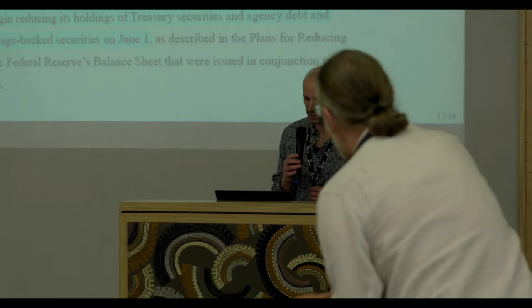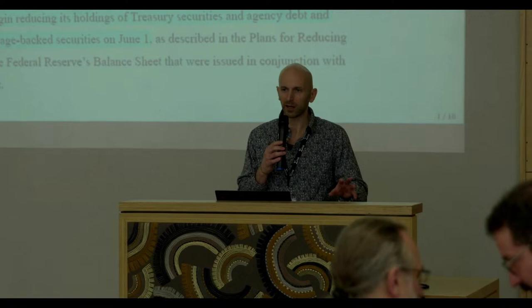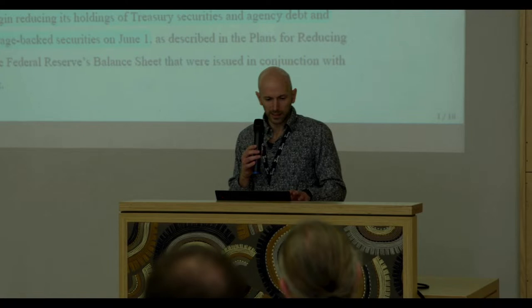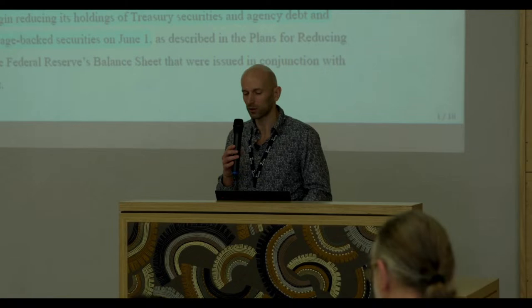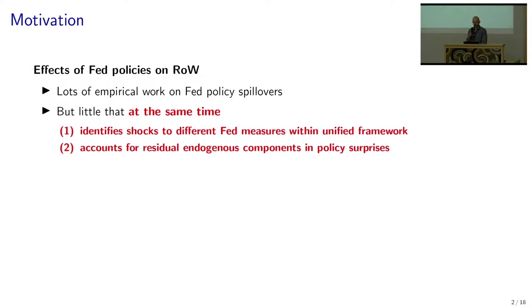Let me illustrate what I mean with different measures in the Fed's toolkit using this FOMC press release from 2022 — it's from the first time I presented this paper externally outside the ECB. Highlighted in red, yellow and blue are three dimensions of Fed monetary policy. In red, the FOMC decided to raise the target range of the federal funds rate — that's the conventional rate policy dimension. In yellow, it expected ongoing increases in the target range — that's the forward guidance component. And in blue, the Fed decided to unwind assets it had purchased in various programs — that's the LSAP, the large-scale asset purchase dimension.